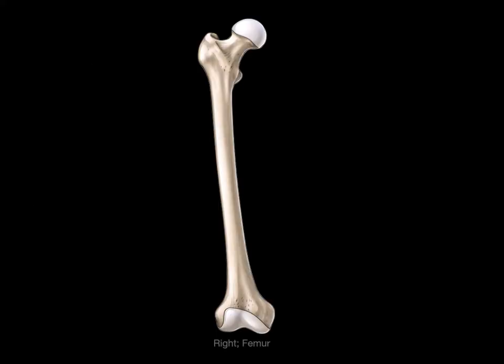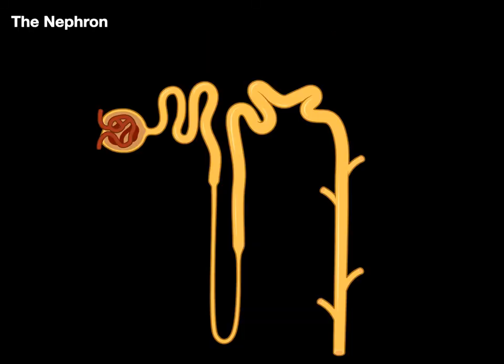Another way we use these terms is just by region — for example, this is the proximal part of the femur bone and this is the distal part of the femur bone. That's another very common usage.